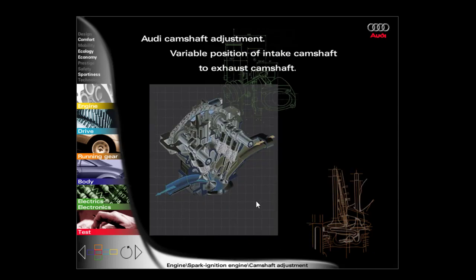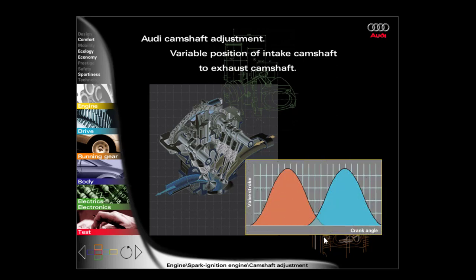As you already know, the camshaft controls the opening and closing of the intake and exhaust valves. The task of variable camshaft control is to change the position of the intake camshaft relative to the exhaust camshaft in certain engine speed ranges. Here you can see the valve lift depending on the crankshaft rotation for the intake and exhaust valves. If the intake camshaft is set to retard, the intake and exhaust valve opening times only overlap for a short period of time. If the intake camshaft is set to advance, the intake and exhaust valve opening times overlap for a longer period of time.